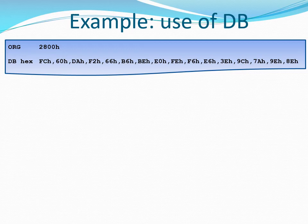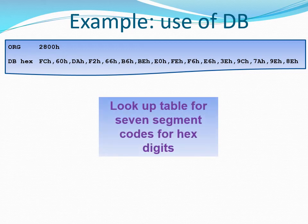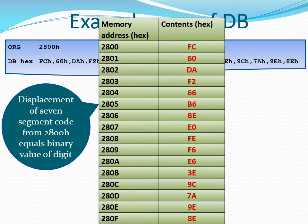A typical use of this kind of scenario is to produce a lookup table — for example, a table for seven-segment codes for the hex digits 0 through F. Those codes in the DB statement represent the seven-segment codes for hex digits 0 through F. When you want to access a code, you specify the hex value and add it to the base address X, where X is 2800H. For example, to get the code for the digit 5, you add 5 to X to get address 2805H, where the code for digit 5 is stored. When retrieved, it can be used to illuminate a seven-segment display.